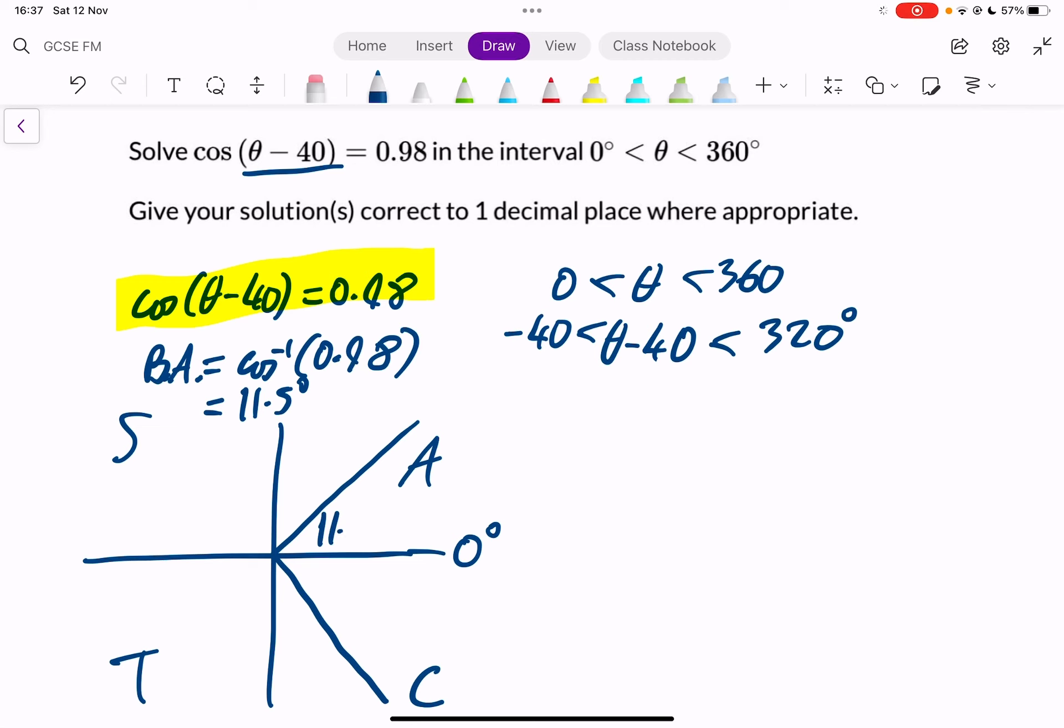So we put 11.5 degrees in here and 11.5 degrees in here. Now we look at our range. And our new range is minus 40 is less than theta minus 40 is less than 320.